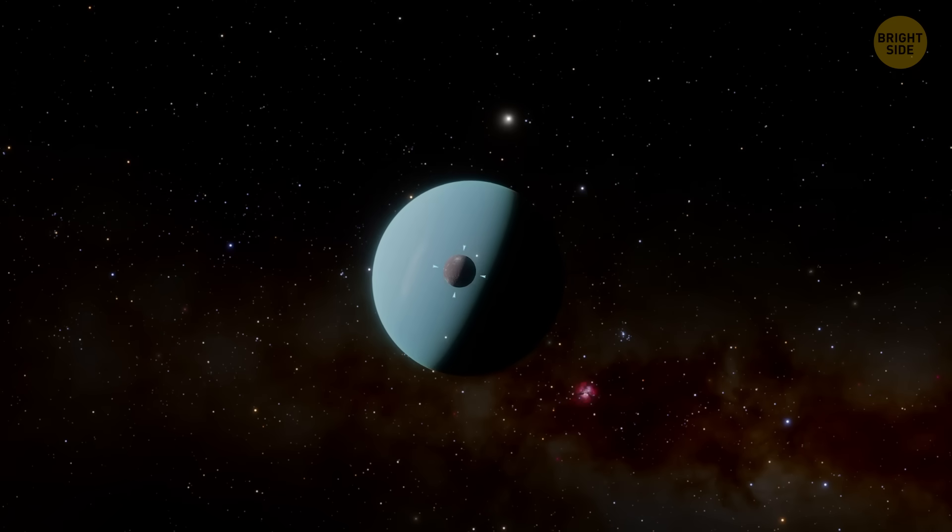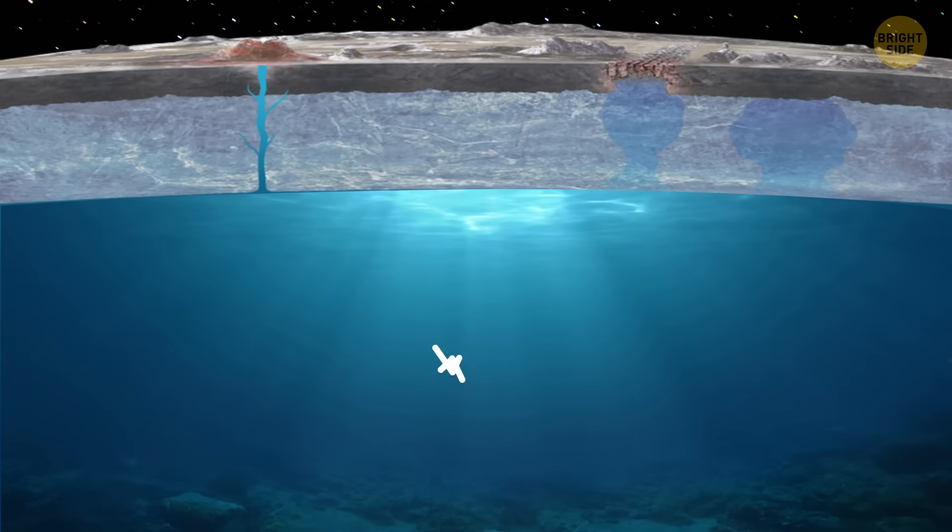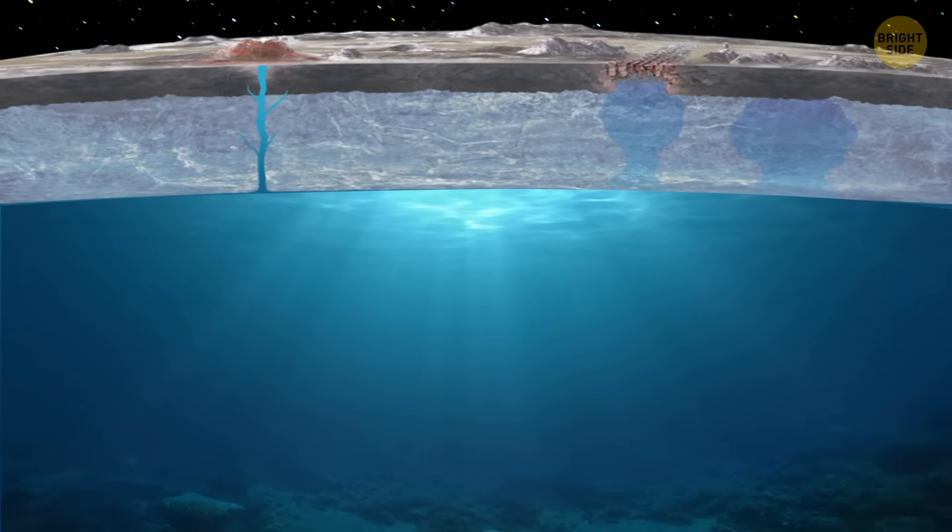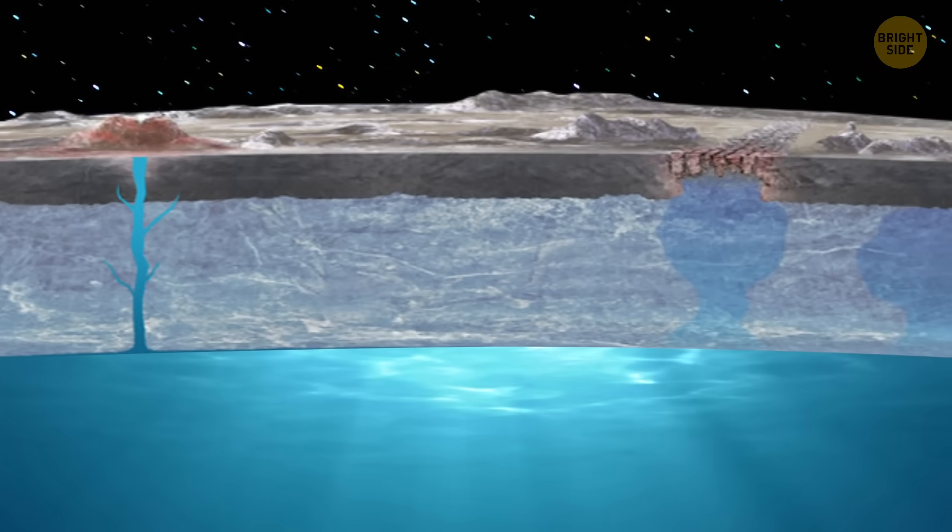Beneath the frozen surface of Uranus's moon Ariel, something massive may be hiding: an ocean more than 100 miles deep. It's 40 times deeper than the Pacific Ocean, and it's been sealed up under ice for billions of years, waiting to be discovered.